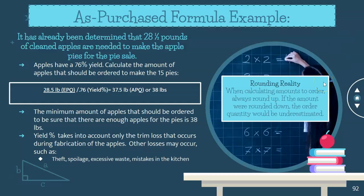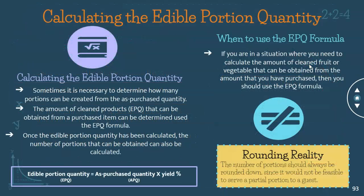When rounding, always round up rather than down so you don't end up with too little. Now, how do you calculate the edible portion quantity? The edible portion quantity formula is: EPQ equals APQ times yield percent. Use this formula when you need to calculate the amount of clean fruit or vegetable that can be obtained from the amount you have purchased.